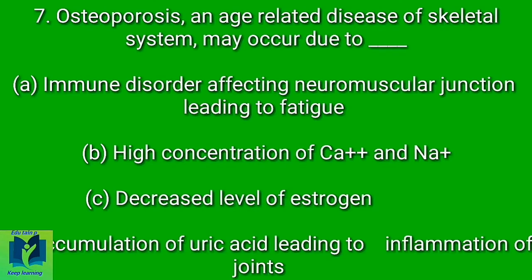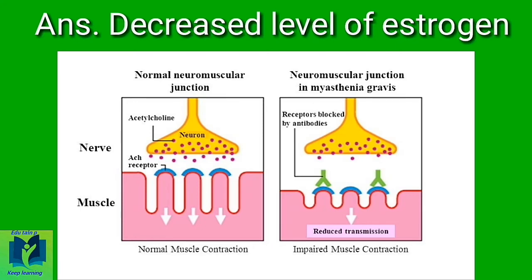Osteoporosis, an age-related disease of the skeletal system, may occur due to dash. Option A: immune disorder affecting neuromuscular junction leading to fatigue. Option B: high concentration of calcium and sodium ions. Option C: decreased level of estrogen. Option D: accumulation of uric acid leading to inflammation of joints. Answer: due to decreased level of estrogen.